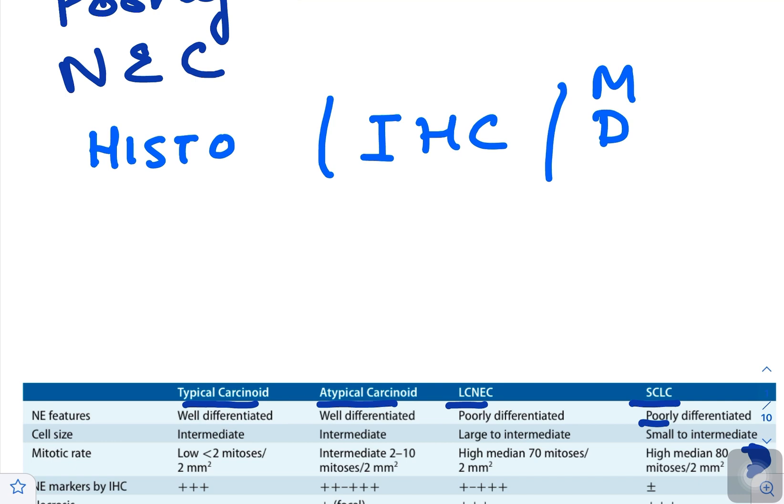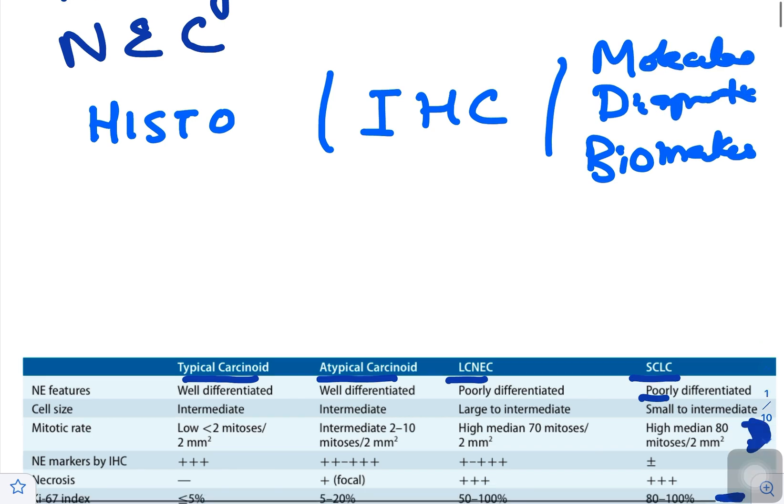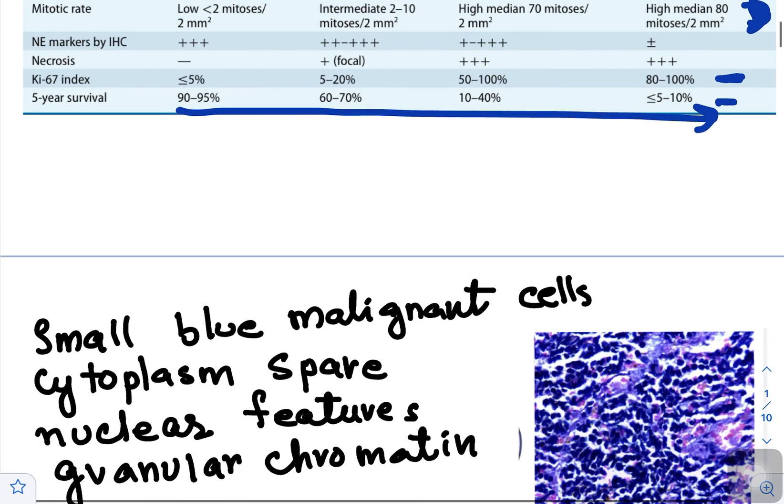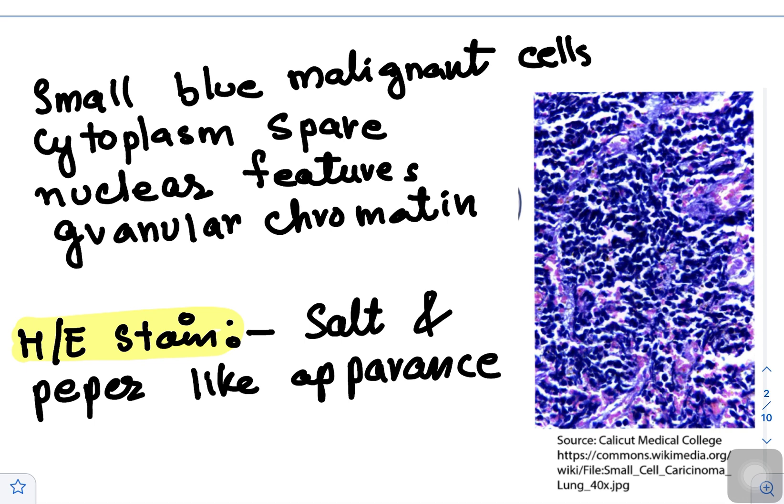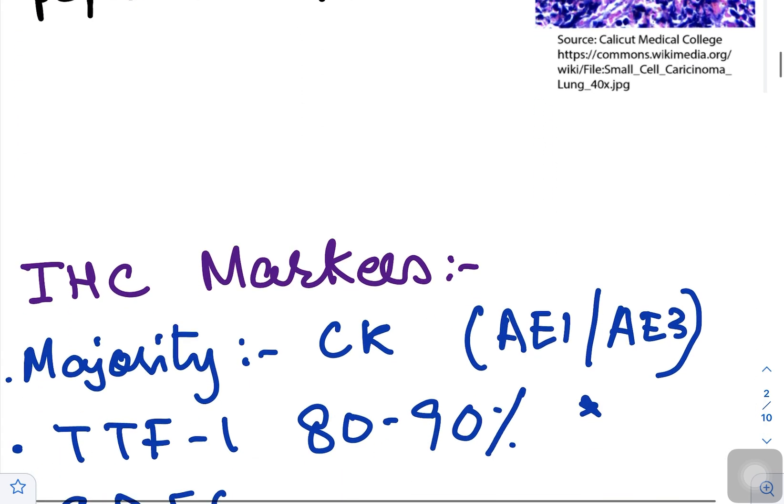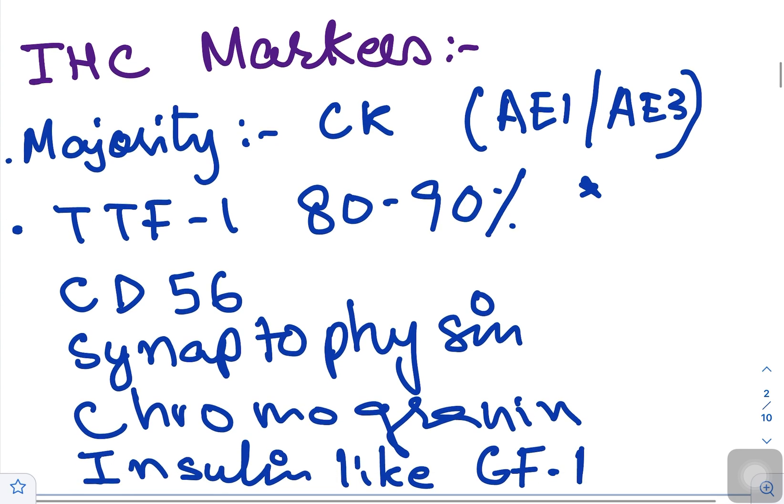In small cell lung cancer, the most important characteristic histological findings are small blue malignant cells. Cytoplasm is scant. Nuclear features are granular chromatin; in H&E stain it looks like salt and pepper-like appearance, as you can see in the slide here.